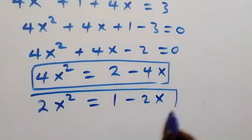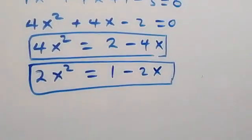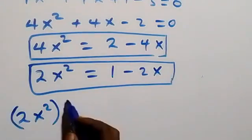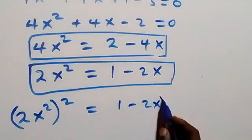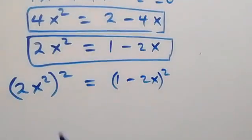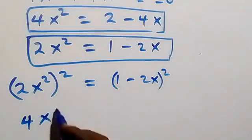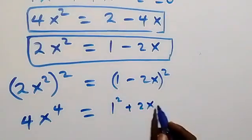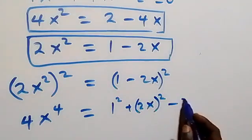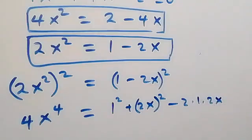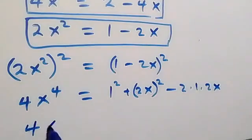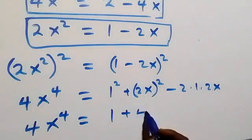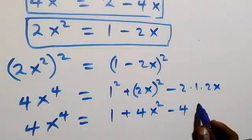Now let's take the square of both sides of this relation, so we have (2x²)² equals to (1 minus 2x)². This gives 4x⁴ equals to 1 plus 4x squared minus 4x.